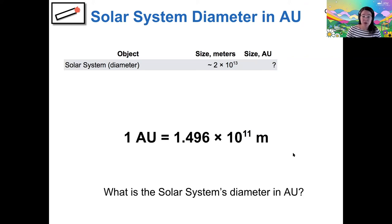So our question is, what is the solar system's diameter in AU? So I'm again going to attempt to write this out. So if I write down the diameter of my solar system in meters, 2 times 10 to the 13 meters. Now I want to convert this to AU.